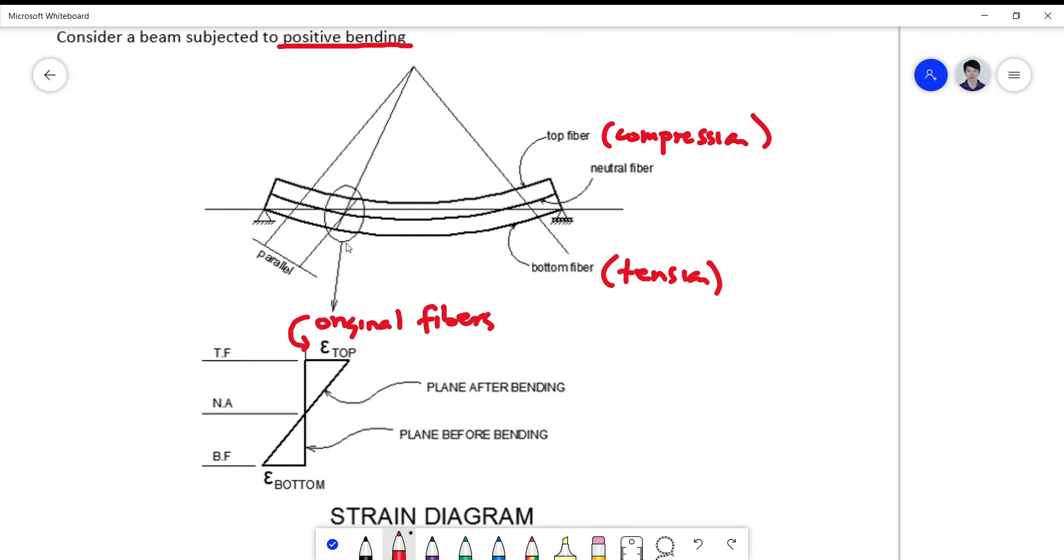So when you draw now the stress or the strain diagram, your strain on top will experience a maximum compressive strain epsilon top, and the strain at the bottom or the fibers at the bottom will experience a maximum tensile strain epsilon bottom.